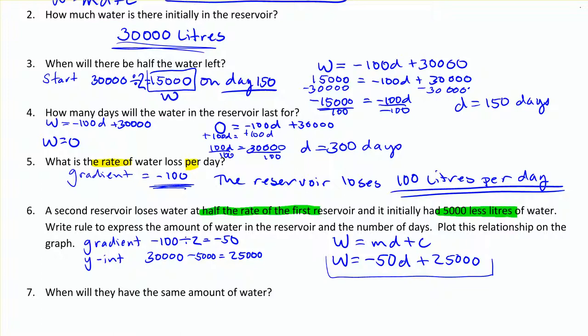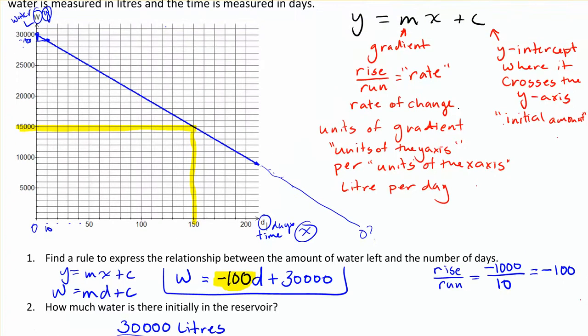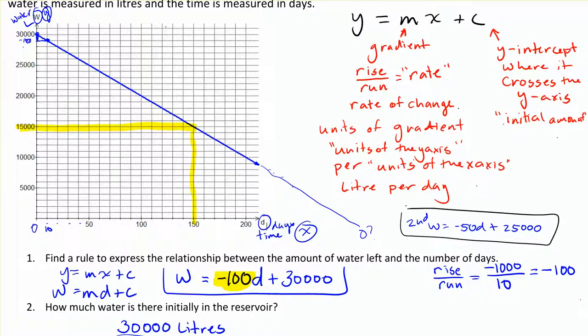And now I need to put that onto the graph. Using my y-intercept method, w is equal to negative 50 d plus 25,000 for the second reservoir. If I'm going to plot using my y equals mx plus c method, the first thing I'm going to do is plot the y-intercept, which is at 25,000. And then the next thing I'm going to use is my gradient, which is negative 50. So I need to go down 50 and over 1, which can be quite complicated on this graph, because a day of 1 would just be somewhere in the middle there.